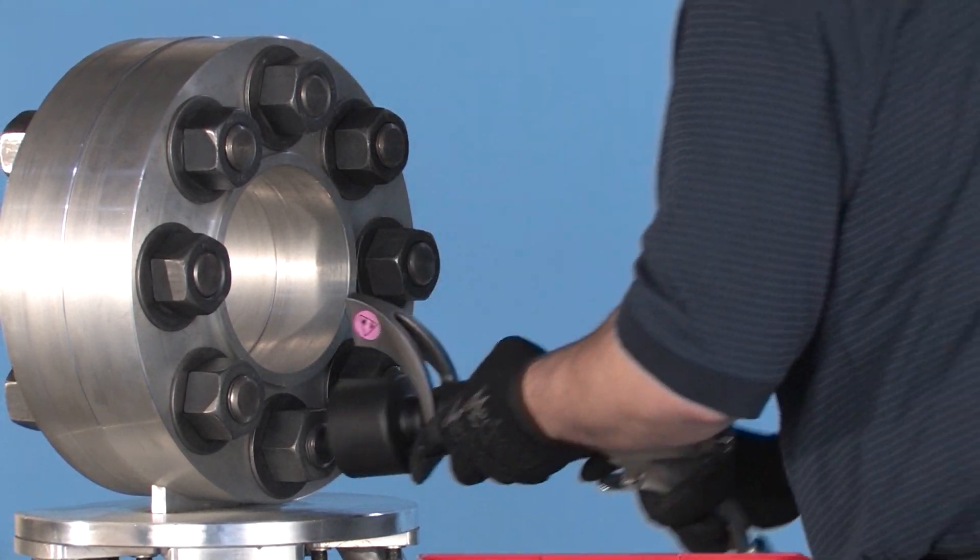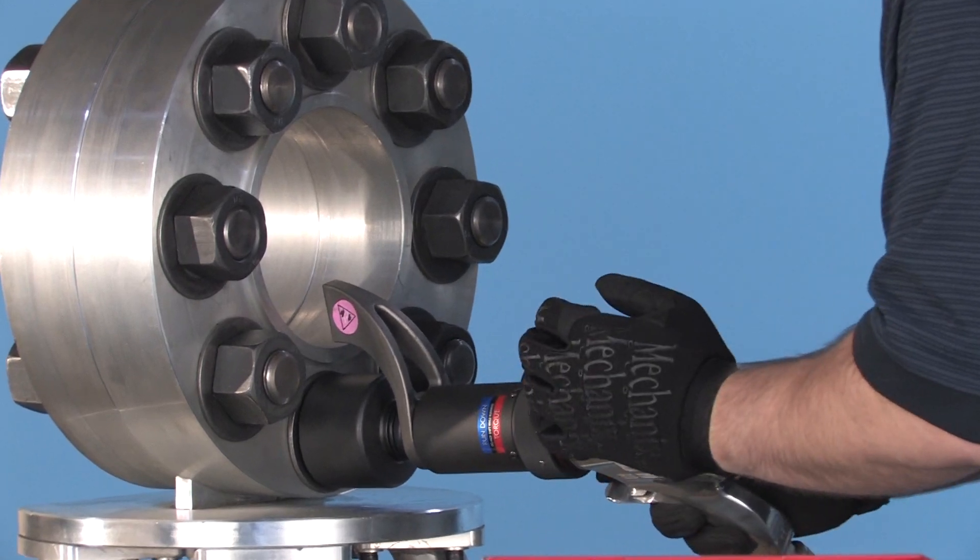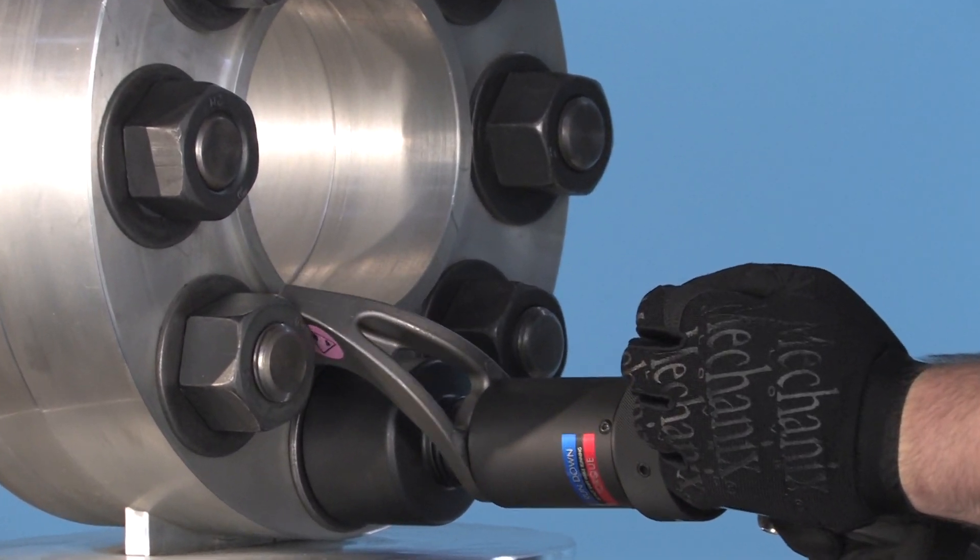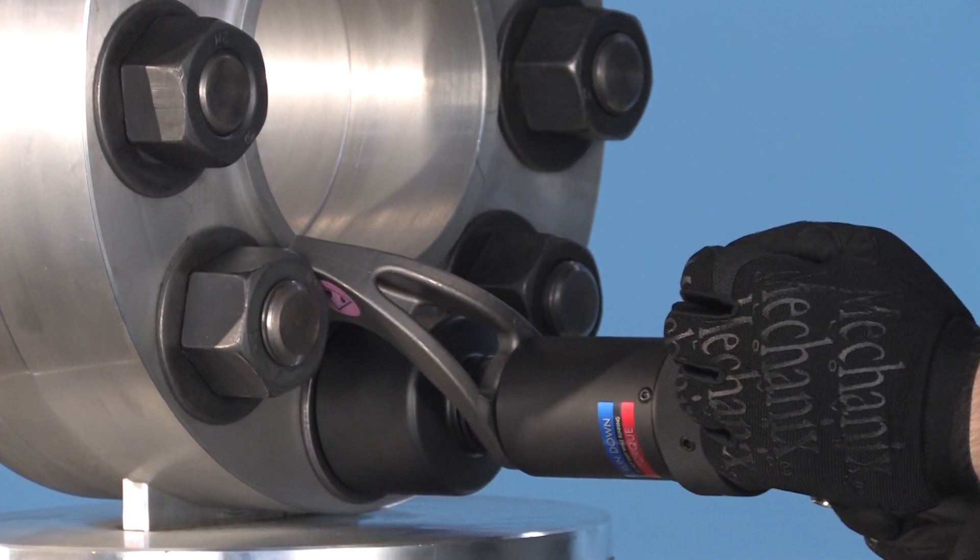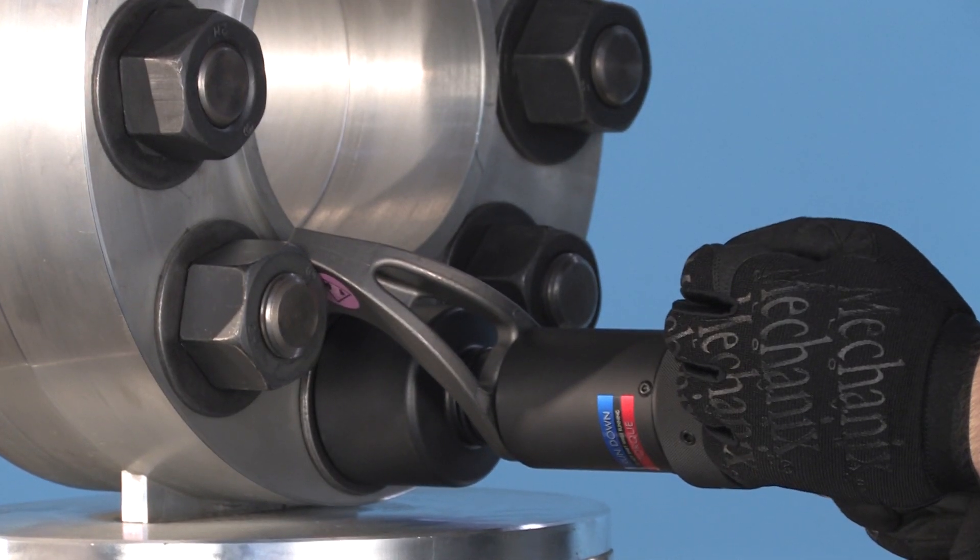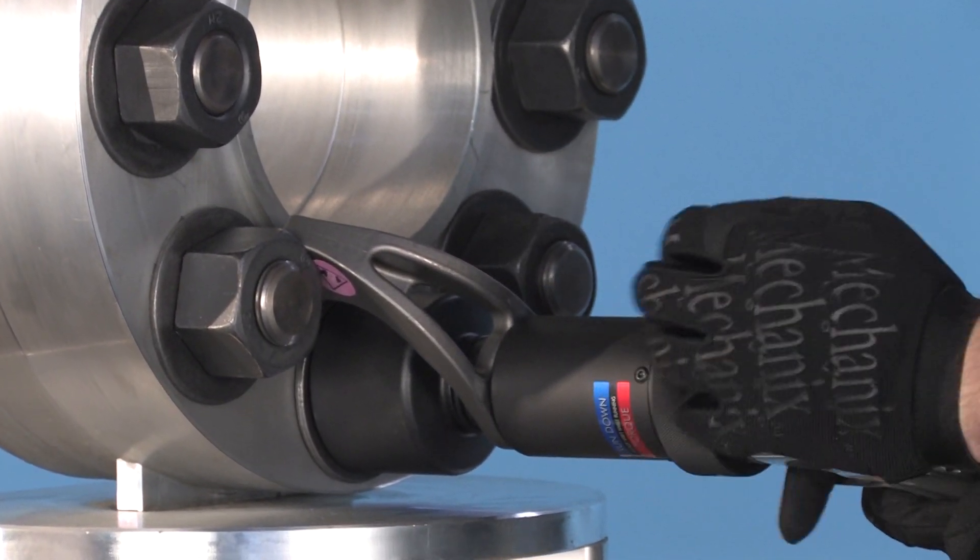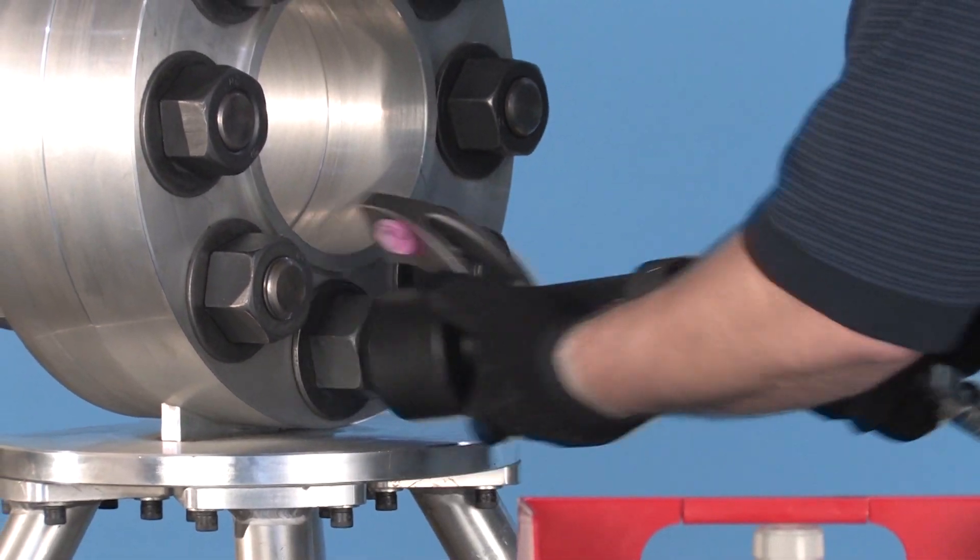Run the tool until it stalls and will no longer advance the socket. You have applied 575 foot-pounds of torque to that nut, and every nut will get the same tightening force until you change the pressure on the regulator.